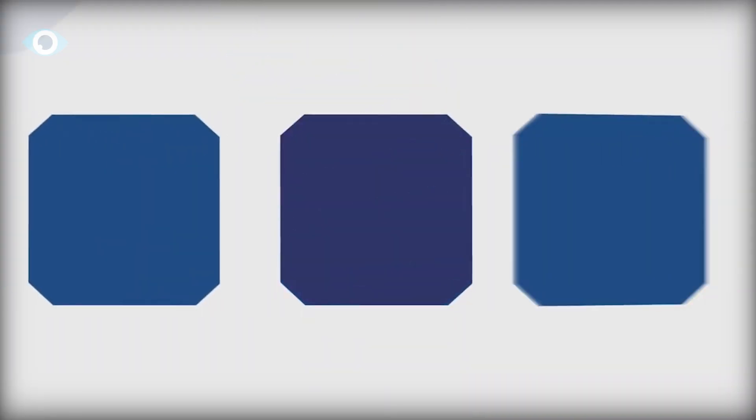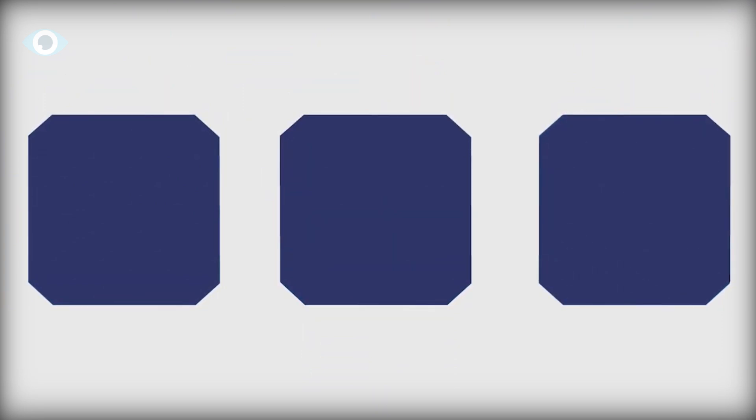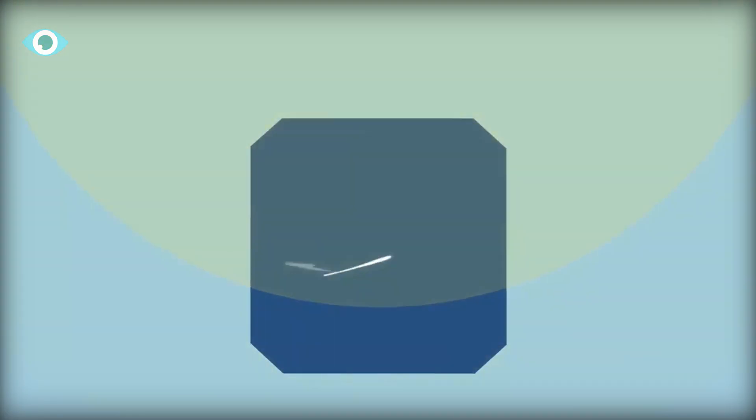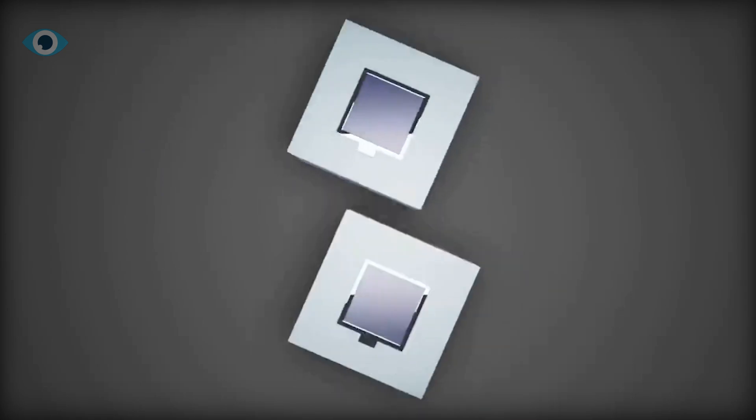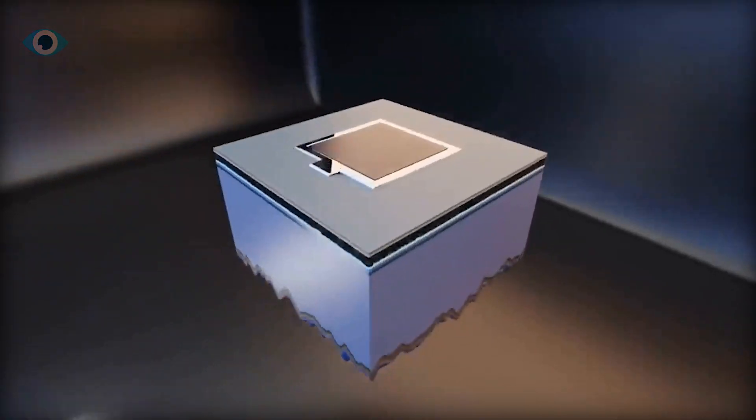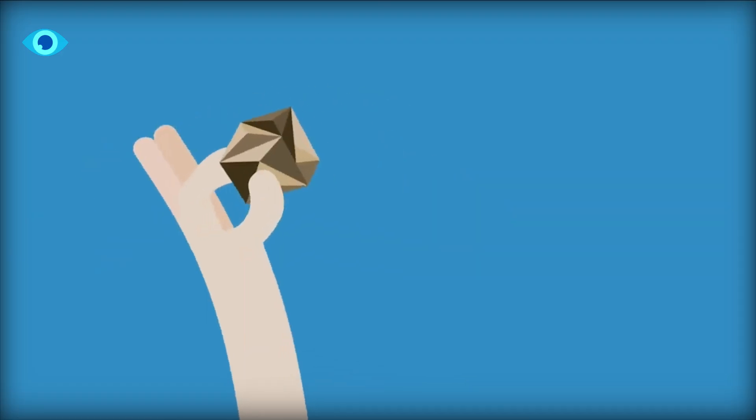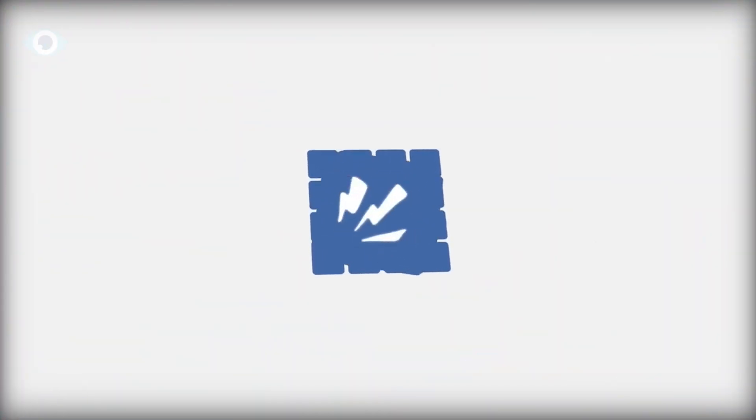The resulting perovskite thin film forms the active layer of the solar cell, where sunlight is absorbed and converted into electricity. Another way is tandem solar cells. Perovskite can also be integrated into tandem solar cells, where it works in conjunction with other materials like silicon to maximize energy conversion efficiency.